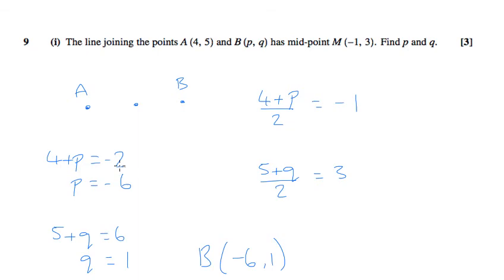You could check: you could add those two points together. 4 plus negative 6 is negative 2, divided by 2 is negative 1. And 5 plus 1 divided by 2 is 3.